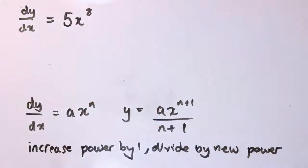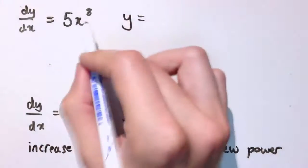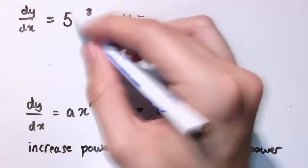So let's do another one, I've got 5x⁸, and I've just summarized what we did here a second ago. So, if we have ax^n, we increase the power by 1, divide by the new power, and we'd get ax^(n+1) divided by n+1.